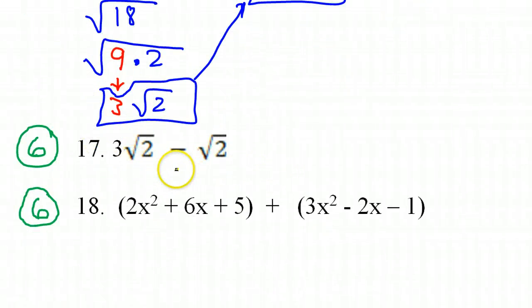All right. Similarly, number 17. Well, you really shouldn't need a calculator for this. This is subtraction and they're like terms. Radical 2 and radical 2. So just understand that this is 1 radical 2, if you will. So 3 radical 2's minus 1 radical 2 should be 2 radical 2's. 3 of these minus 1 of these is 2 of these.